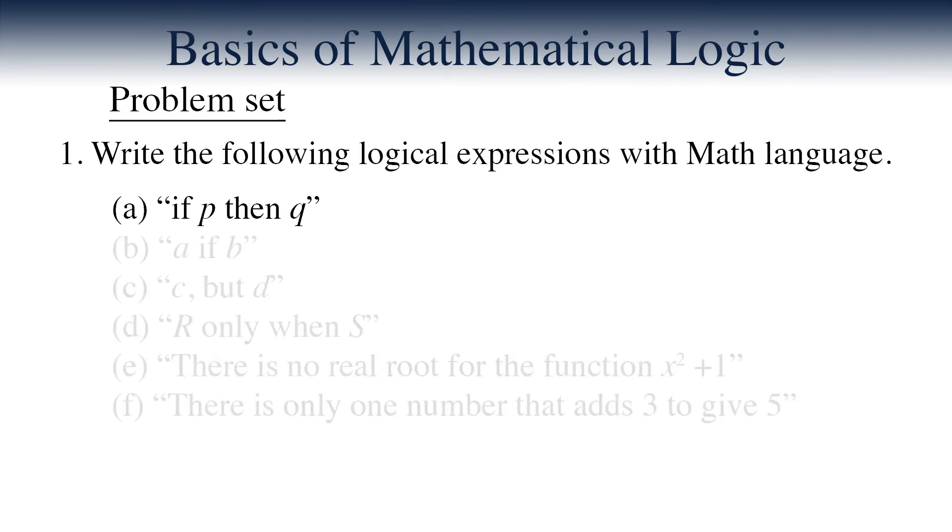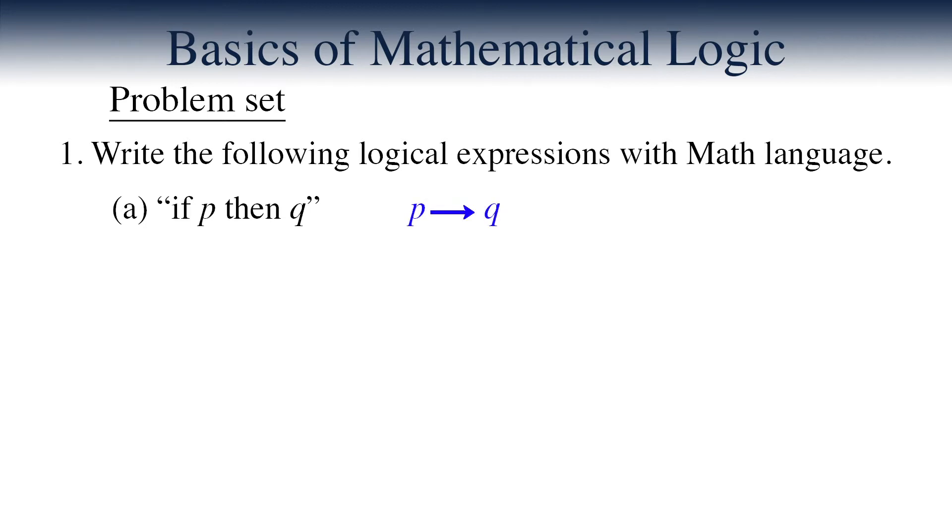The first expression says, if P then Q. This is the usual implication relation which says Q is a fact resulted from the assumption P. So we write P implies Q.